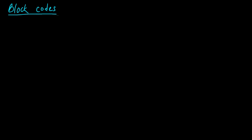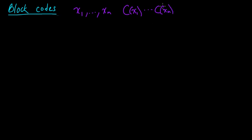So far we've just been considering symbol codes in which, given a sequence of source symbols x1 up to xn, we encoded this by concatenating a sequence of code words cx1 up to cxn. But this is a very restricted sort of code, and one problem which can arise is that there are certain inefficiencies from the fact that each code word has to have an integer-valued length. When we saw the upper and lower bounds on the expected code word length, we saw that it was lower bounded by the entropy and upper bounded by the entropy plus one.